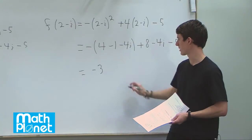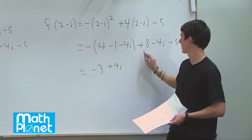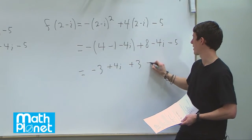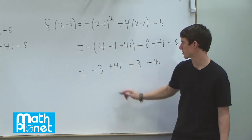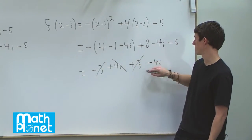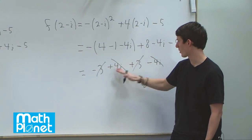Then we have minus 4i, so we have plus 4i. And then we have 8 minus 5, which is plus 3, and this is still minus 4i. So do these cancel? Sure, we have minus 3 plus 3 plus 4i minus 4i.